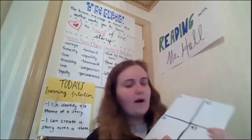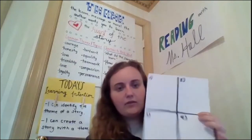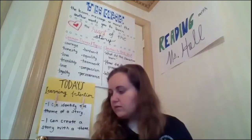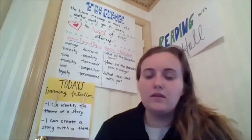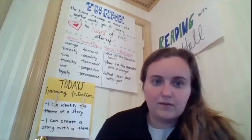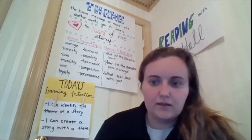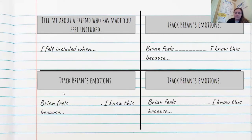In your fourth box, go ahead and track how Brian is feeling now. You can say: 'Brian feels blank because...' We filled out our chart all the way. By the end of our story, Brian is feeling more included — maybe he feels happy because he now has a friend.